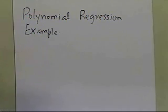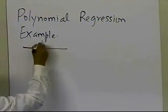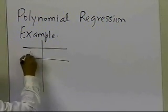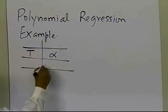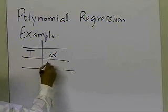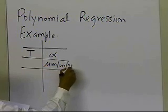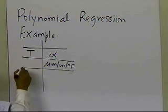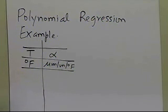Let's suppose somebody gives us alpha versus temperature data. Alpha is a thermal expansion coefficient, with units of micro-inch per inch per degree Fahrenheit, and the temperature is given in degrees Fahrenheit. We would like to regress this data to a second-order polynomial.